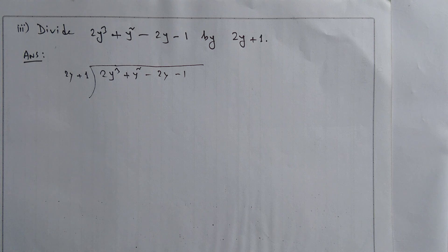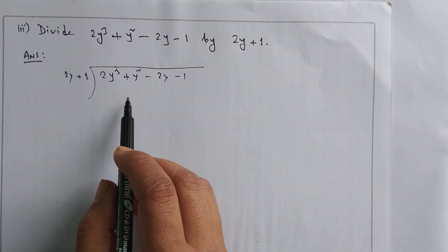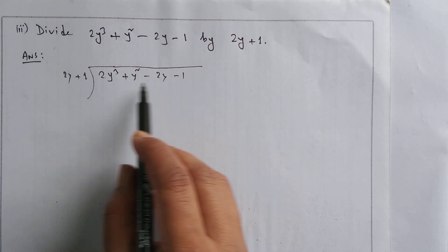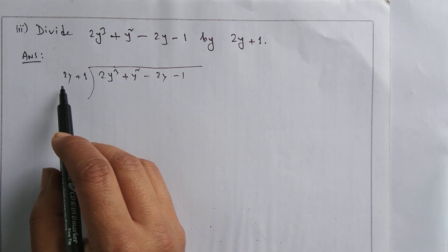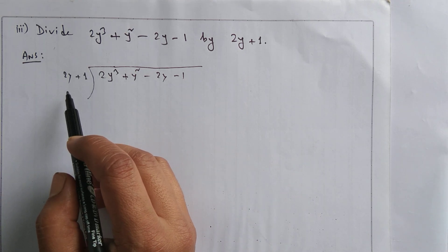Example of division: divide 2y³ + y² - 2y - 1 by 2y + 1. So we need to divide 2y³ + y² - 2y - 1, this is the dividend, and it is to be divided by the divisor 2y + 1. The steps are the same.